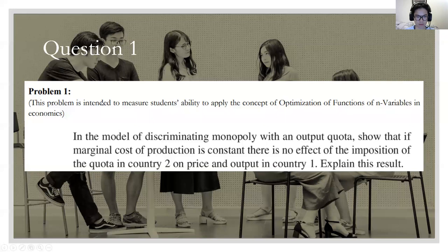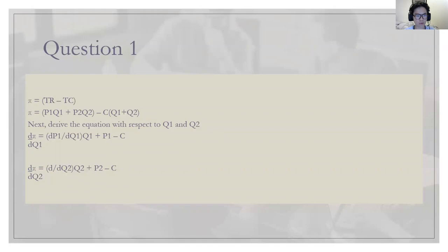Question number one: we are asked to show that if marginal cost of production is constant, there is no effect of the imposition of a quota in country 2 on the price and output of country 1. We are going to explain this result. To do this, we're first going to find our profit function, which is TR minus TC.